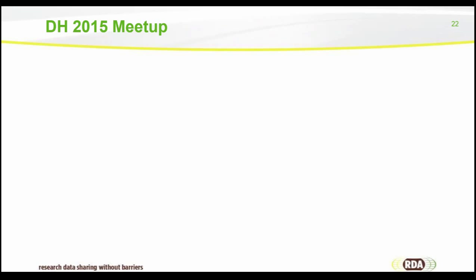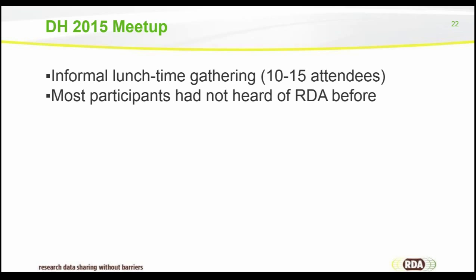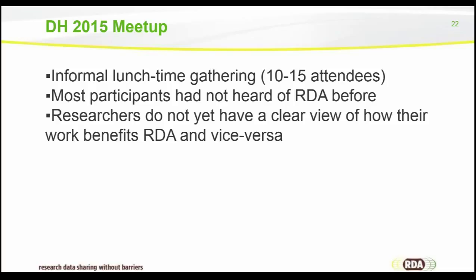The last outreach effort is the meetup we had at the DH 2015 conference in Sydney. Ingrid Mason helped organize it, and we had an informal lunchtime gathering with about 10 to 15 attendees — though it's always difficult when you're competing with lunch to get a good crowd. Interestingly, most participants had not really heard of RDA before, or had only a very vague understanding of what RDA was doing. People came mostly drawn by the topic of infrastructure and the opportunity to talk about what they felt infrastructure needs were. It was clear that researchers do not yet have a clear view of how their work benefits RDA and vice versa.